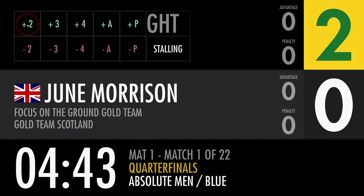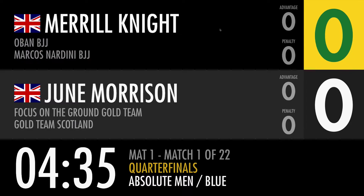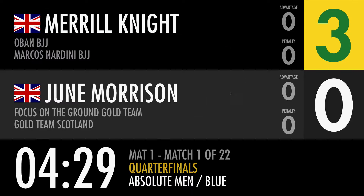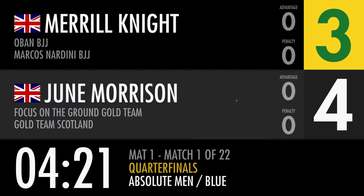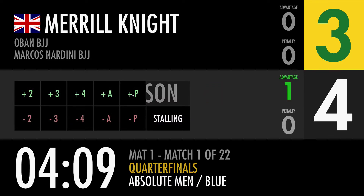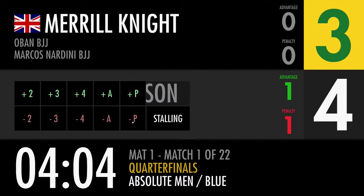Clicking plus two gives two points. Clicking minus two will retract the points. So each time somebody gets points I will click and then score points. To give points for June I will click in this gray area here and score points. In this scoreboard there are advantages and penalties, so if I want to give an advantage I will click plus A, or a penalty would be plus P, and I can always remove them by going to minus.